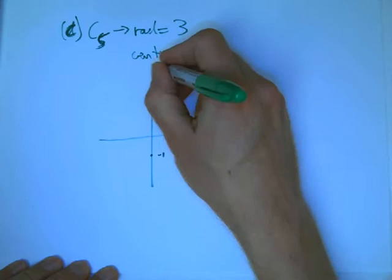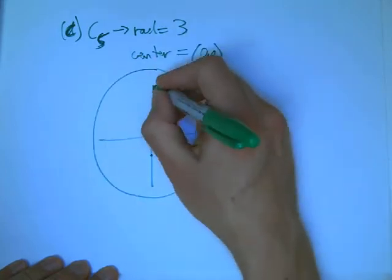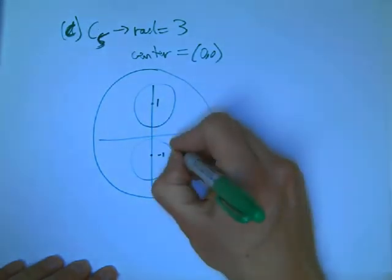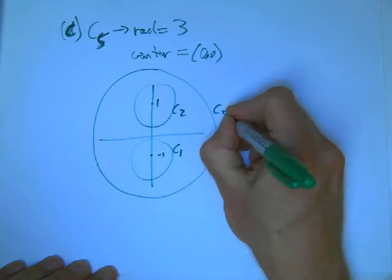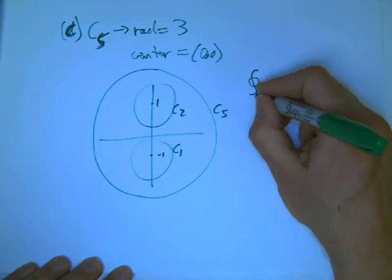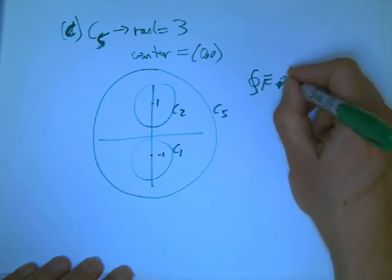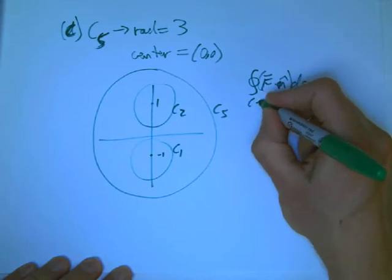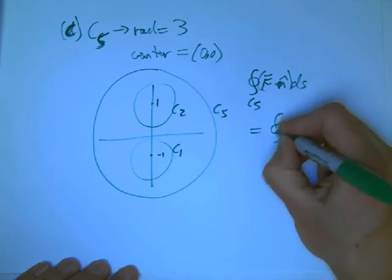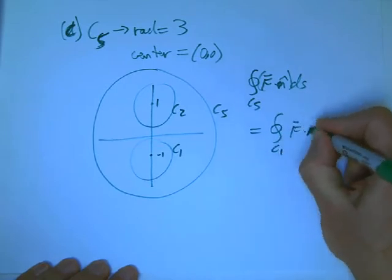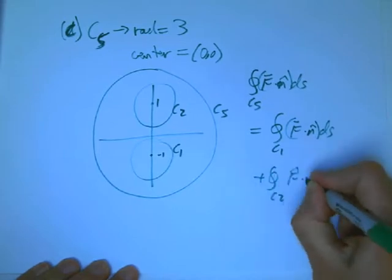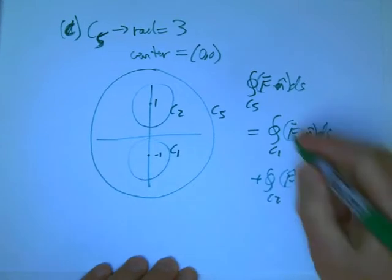So here's, you know, plus 1, minus 1, and here's center, radius 3. Well, roughly speaking, it's like that. And so I know this circle and this circle, that was C1, that's C2, there's C5. And I claim that the integral, the flux outward through C5, I claim it's just the sum of the flux outward through C1 and the flux outward through C2.